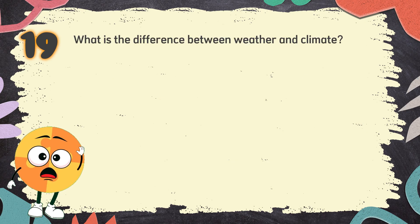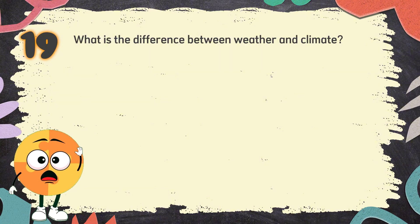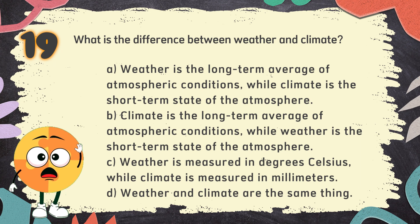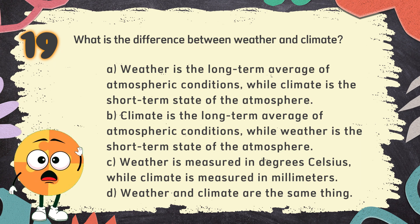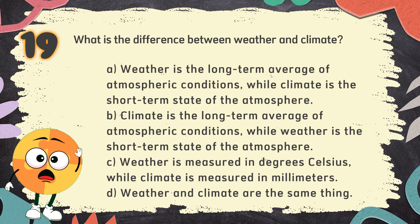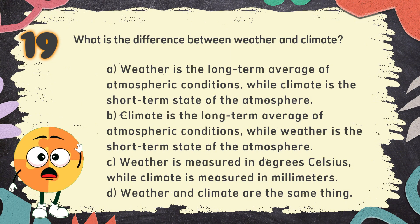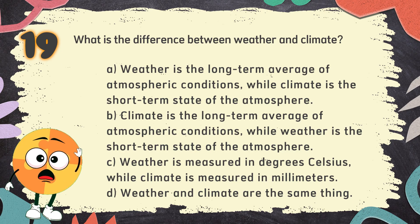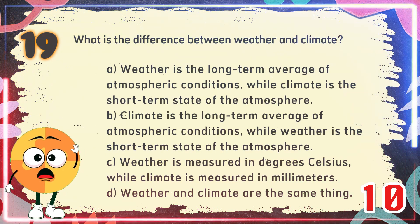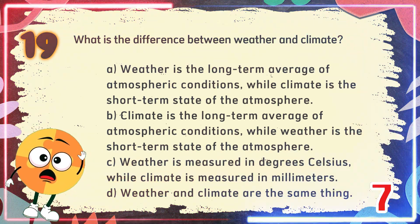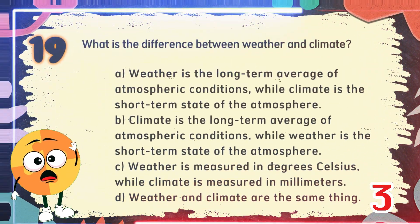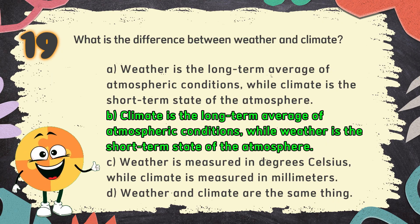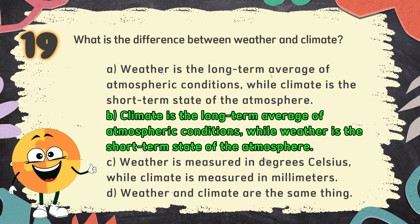Number 19. What is the difference between weather and climate? The choices are A. Weather is the long-term average of atmospheric conditions while climate is the short-term state of the atmosphere, B. Climate is the long-term average of atmospheric conditions while weather is the short-term state of the atmosphere, C. Weather is measured in degrees Celsius while climate is measured in millimeters, D. Weather and climate are the same thing. The correct answer is B. Climate is the long-term average of atmospheric conditions while weather is the short-term state of the atmosphere.